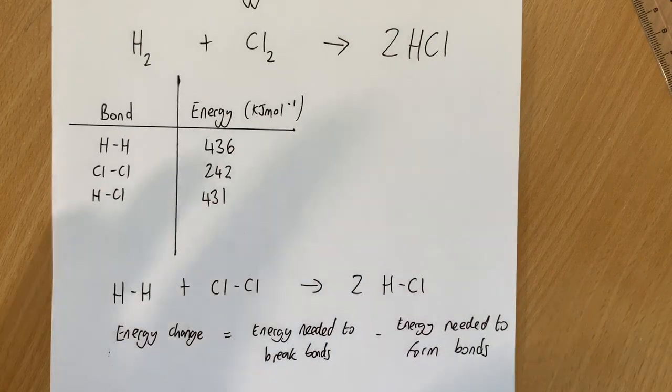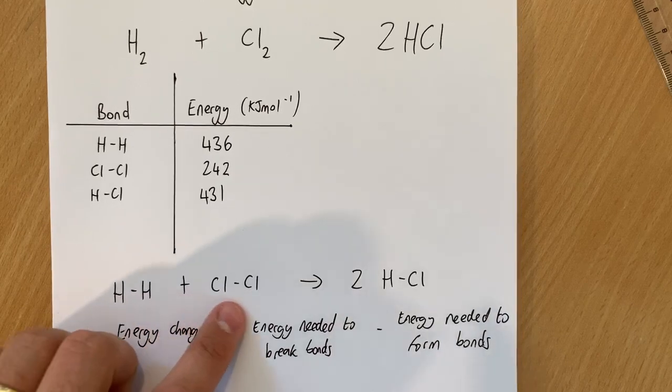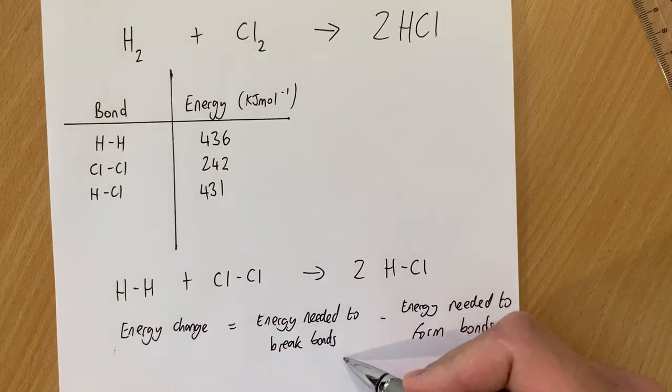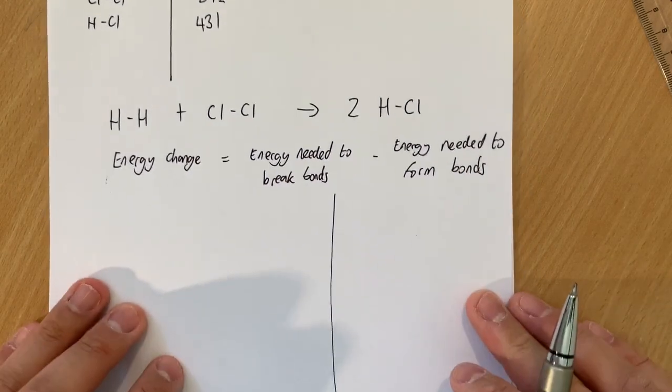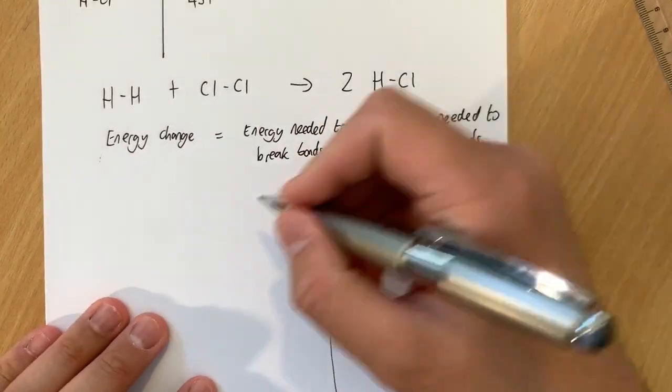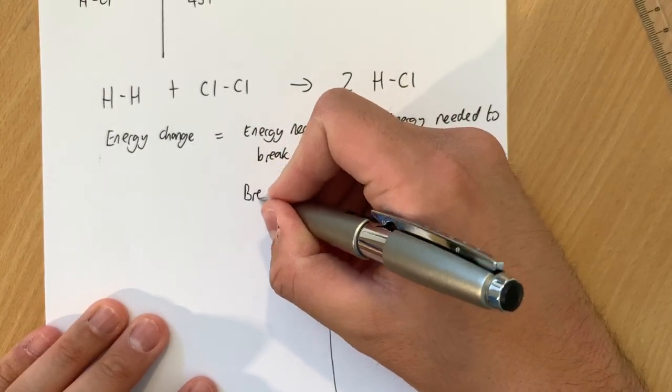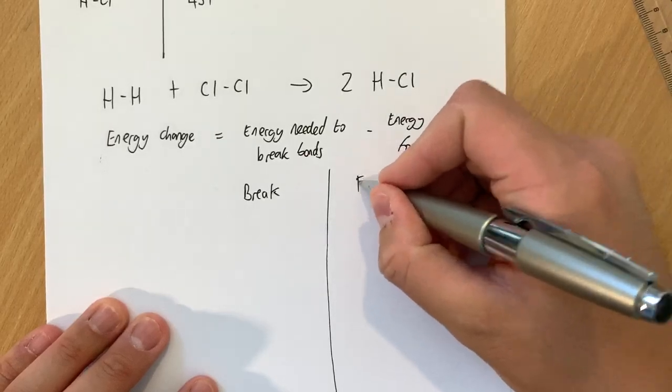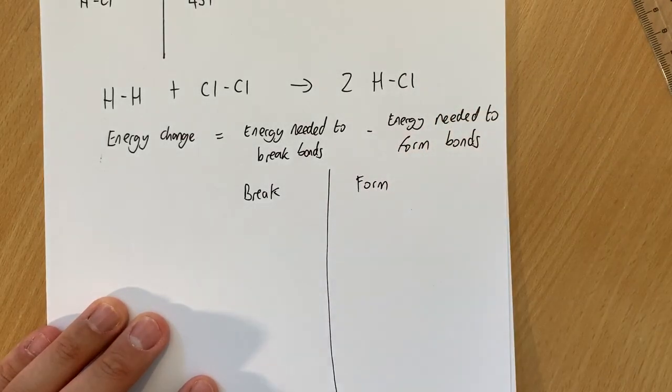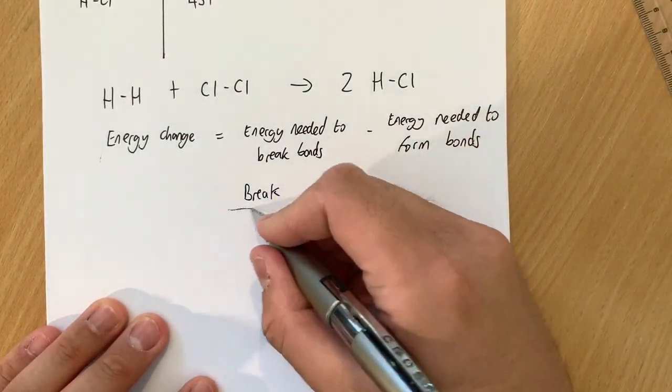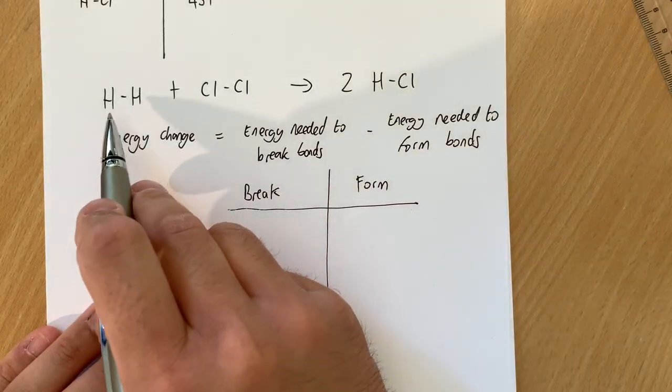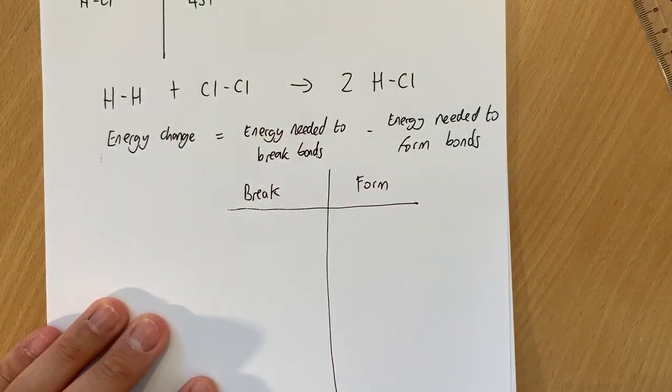So in this instance, the energy needed to break is all the energy associated with this side. So effectively what we can do is we can divide our page down like this, where this is the energy needed to break and this is the energy needed to form.